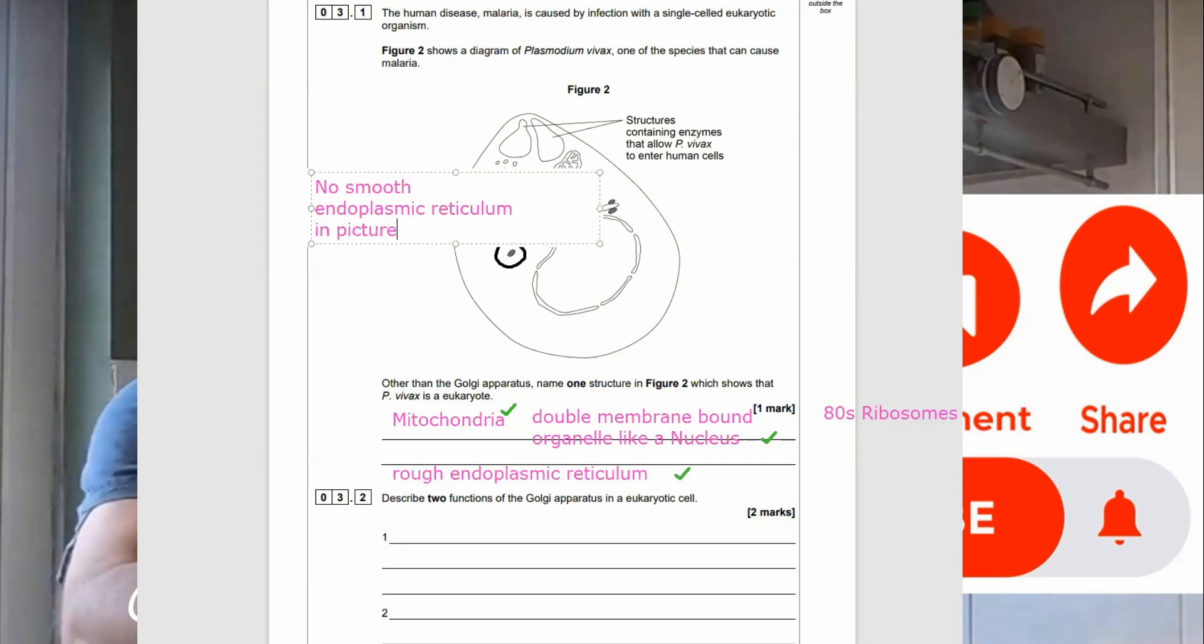Now, some people get the Golgi apparatus mixed up with the smooth endoplasmic reticulum. They have a slightly different shape. The Golgi apparatus is more C-shaped, and you will have little vesicles arriving and budding off of the Golgi apparatus.